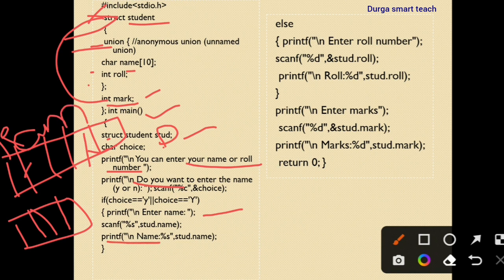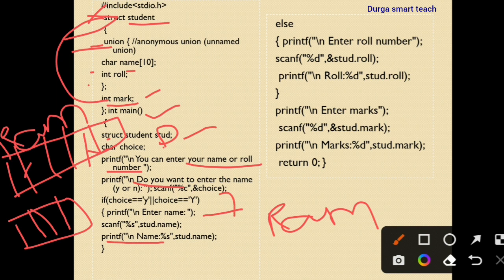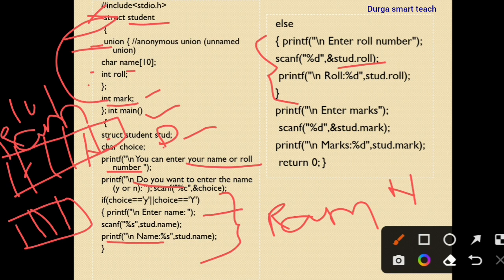Then printf displays the name using stud.name. In the else branch, if the user enters 'n' (no), the set of instructions for roll number is executed — the user enters the roll number, it is stored, and then the roll number is displayed.